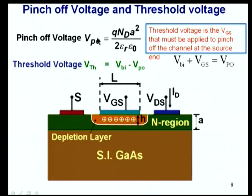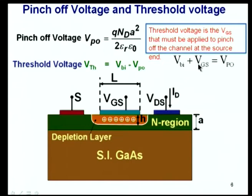Thinner layers give smaller pinch-off voltage; higher doping gives higher pinch-off voltage for a given thickness. If the built-in voltage VBI is less than VP0, the depletion layer width is less than the channel thickness, so the device is normally on — depletion mode. To turn it off, I must apply additional negative gate voltage so that VBI + VGS = VP0. The threshold voltage is defined as the gate voltage that must be applied so that the channel is just completely depleted: VT = VBI − VP0.